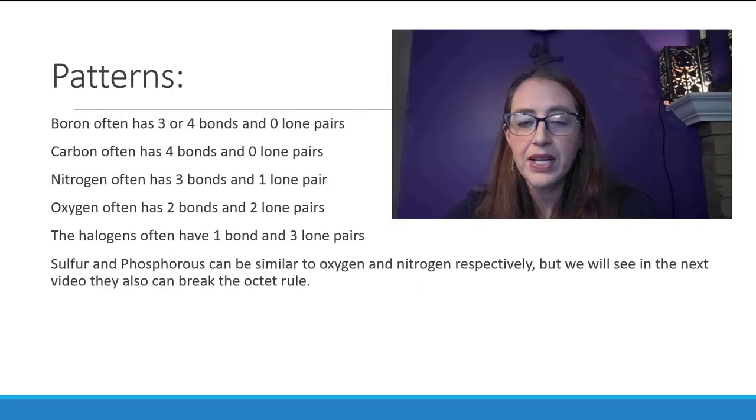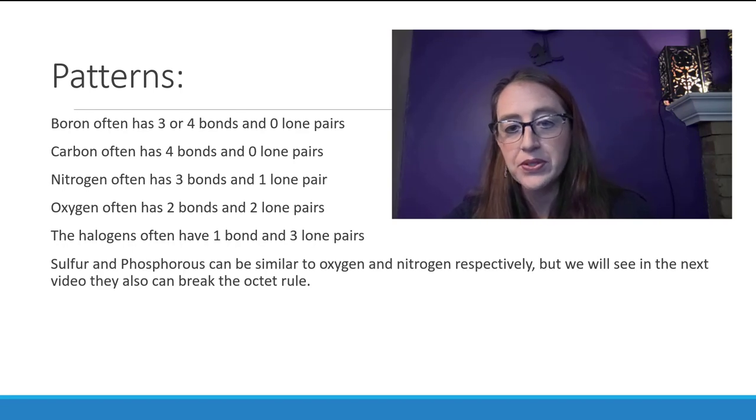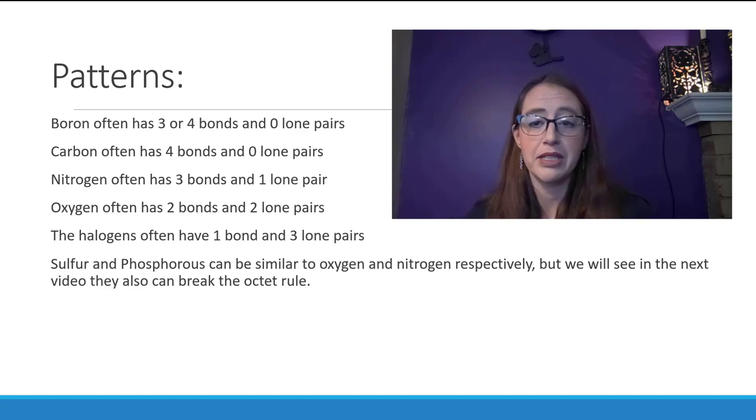Now that you've seen this completed a few times, I want to give you some helpful tricks that will help you do Lewis structures more quickly. These are not hard and fast rules. They're just common patterns that will help you. All of these occur because bonding patterns which give the atom a formal charge of zero while still having a stable number of electrons.